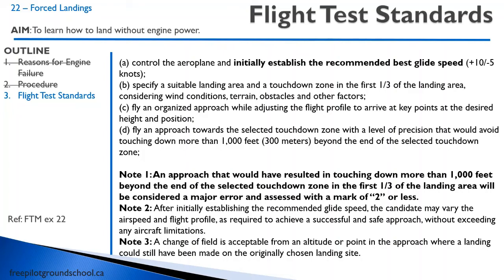There's an expectation that immediately when the examiner says 'simulate engine failure,' you're going to establish best glide speed and be able to touch down in the first third of the landing area, then go through all your checks. Most importantly, if you do nothing else, make the field. If you don't make the field, you'll get a one — you'll fail. But if you make the field and forget everything else in your procedure, it'll be a major error, a two, but at least you made the field.